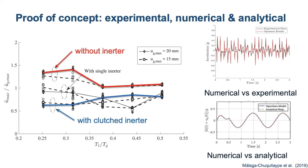He performed a series of experiments on these small scale models, and the results of the proof of concept were quite encouraging. Here we have a graph plotting the accelerations, peak accelerations against different period ratios. You can see that the structure with the clutch inerter really experiences significantly lower accelerations than the unprotected structure, and this later translates into reductions in deformations.